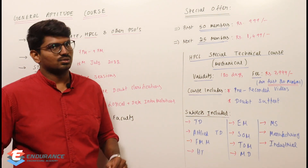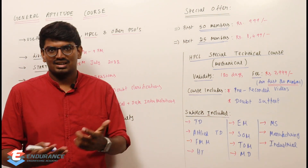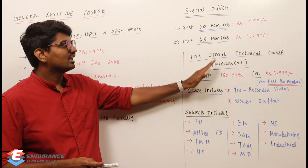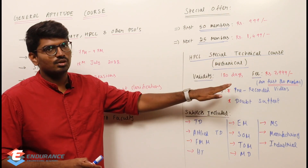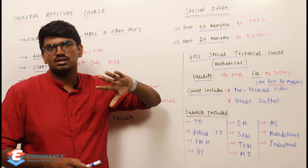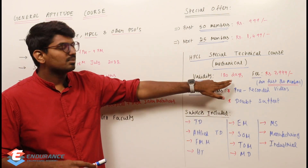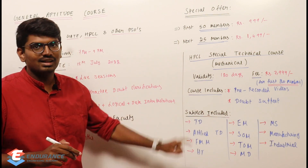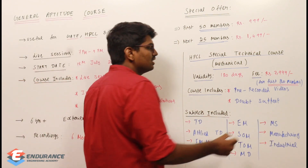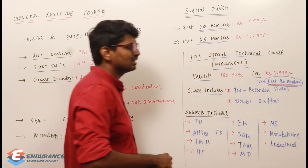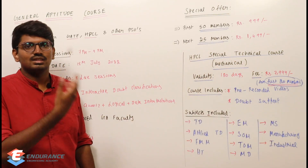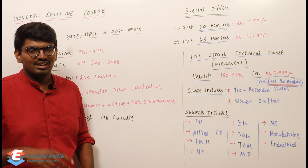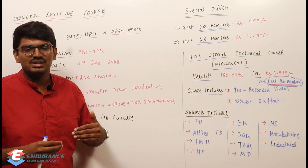Next, HPCL Special Technical Course. That is only for Mechanical. When you have a mechanical course, we have to deal with mechanical subjects. HPCL Special Technical Course is only for mechanical, with a validity of 120 days from the date of registration. When you register, there are 120 days of validity. The course fee is Rs. 7999, and that Rs. 7999 is only for the first 20 members. The course fee is transparent — we are going to say how many people have registered.